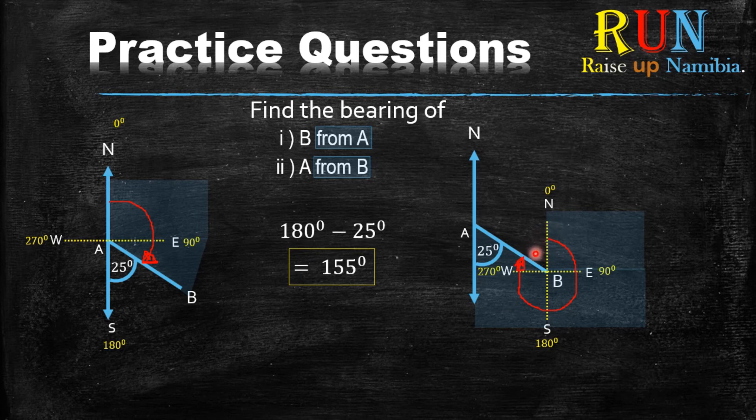Now I want you to take a closer look again. If you take a close look, there is like an alternate angle over here, which is like a Z. Remember, I told you an alternate angle is like a Z. So whatever is in this corner is equal to whatever is in this corner. Meaning if this is 25 degrees, this over here is also 25 degrees.